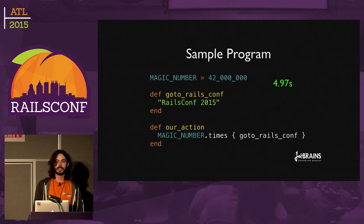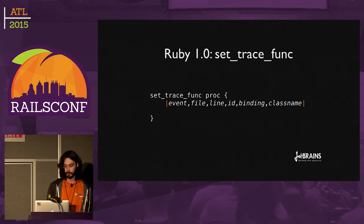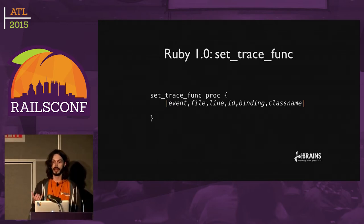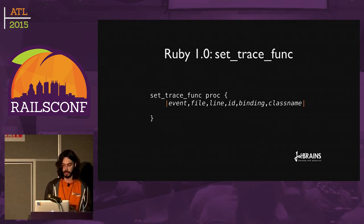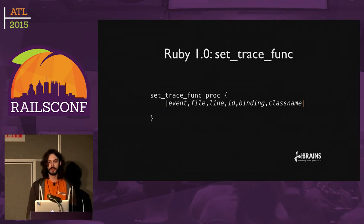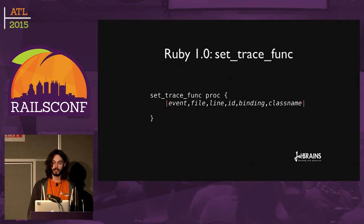So how are we going to understand where we are at the moment? Ruby 1.0 introduces a really simple and handy function called set_trace_func. It takes a proc, and every time a Ruby VM event happens, your block gets called and you get event, file, line, ID, binding, and class name. File and line are pretty obvious. ID is the method name that's currently executed. Class name is the class of the object in which that method is executed.